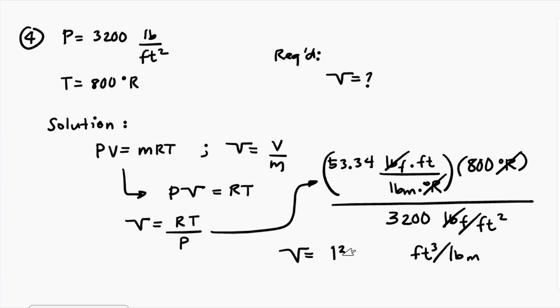Let's solve: 53.34 times 800 over 3200, we get 13.34 cubic foot per pound mass. This is our final answer for problem number four. Very basic, just use the ideal gas equation PV equals mRT. We proceed to our last problem, problem number five.